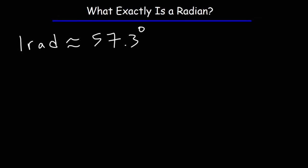How do we get that number? How do we get that one radian is equal to approximately 57.3 degrees? Well, let's draw a circle. How many degrees is one complete circle?